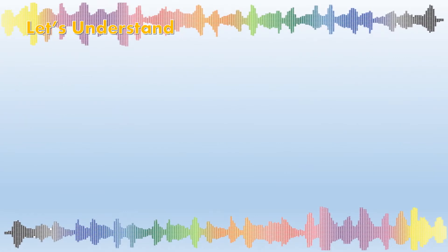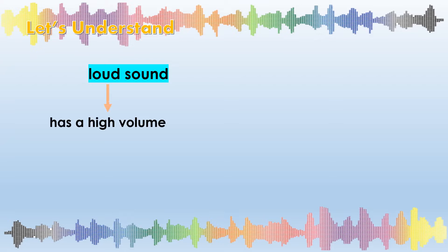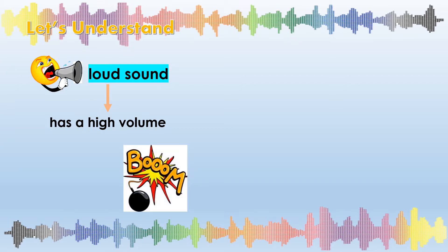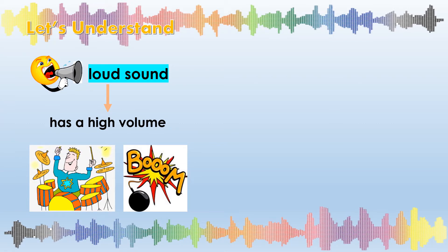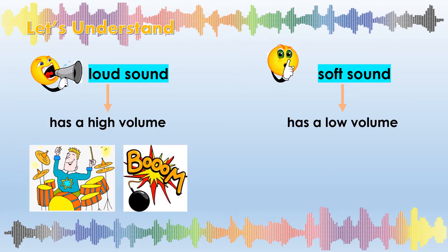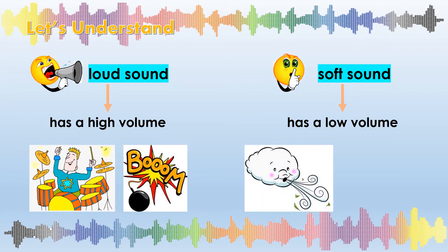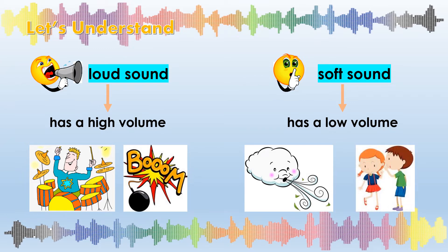A loud sound has a high volume, just like the sound from a bomb exploding and beating of drums. On the other hand, soft sounds have a low volume. For example, the blowing of the wind and two people whispering.